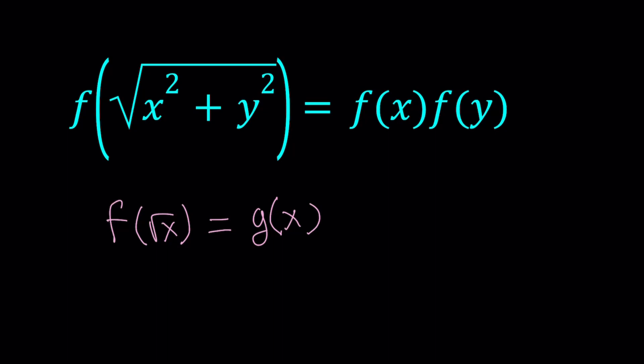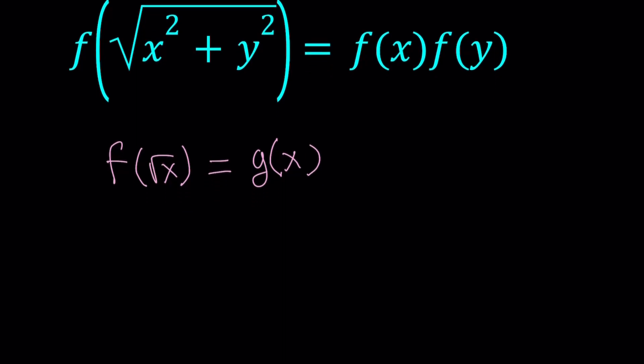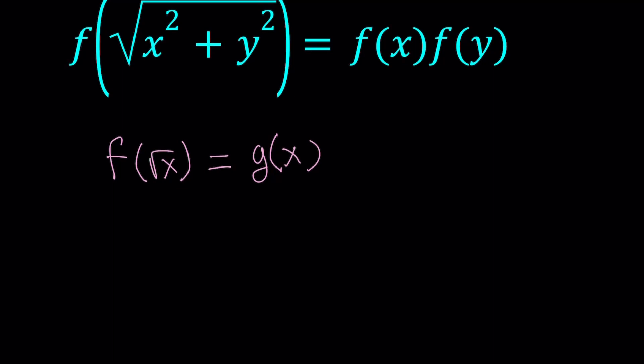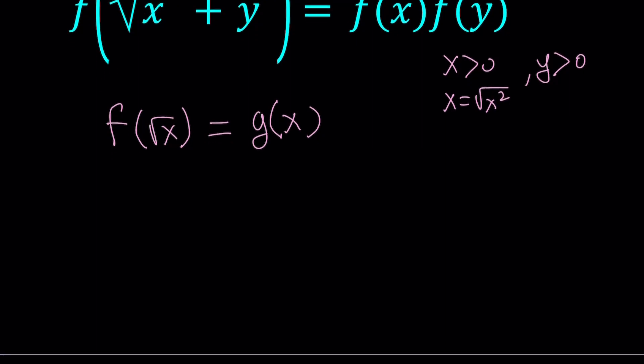It's very common with functional equations to define a function in terms of another one, so you can make your equation simpler. By making this substitution, we're going to turn our equation into something more manageable. So this implies, of course, we're going to be doing a lot of substitutions here. I'm going to replace x with x squared. And since x is positive and y is positive, this just means that x can be written as square root of x squared, without the absolute value.